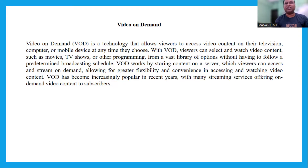Delivery: after the content is encoded, it needs to be delivered to a content delivery network that can serve the content to users. The CDN stores the content in multiple server locations to ensure quick and efficient delivery to users around the world. Next is playback: once the content is delivered, users can access it through a streaming platform or application on their device. They can browse available content and select what they want to watch. The video is streamed from the CDN to the user's device in real time.